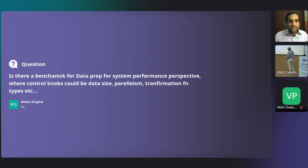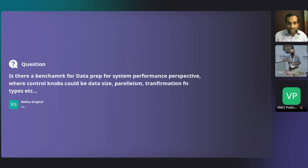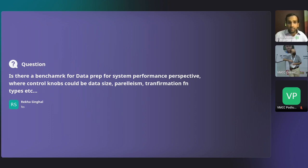Question from Rekha: is there a benchmark for data prep for system performance, with control knobs like data size, parallelism, and transformation function types? From the standpoint of system performance, we haven't prioritized this because for many of these AutoML tools, getting them to work reliably and accurately is itself a huge concern. But once that is settled, we need to expand benchmark metrics to account for system metrics. The analogy would be like TPC metrics in the relational DBMS context—we need something like that for data transformation and data preparation for ML.